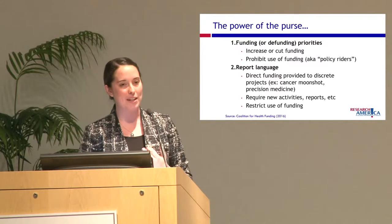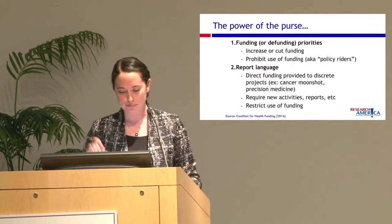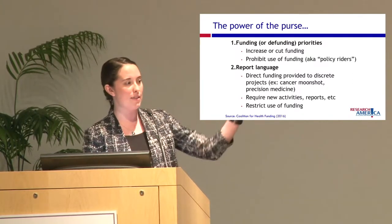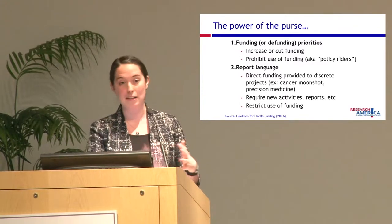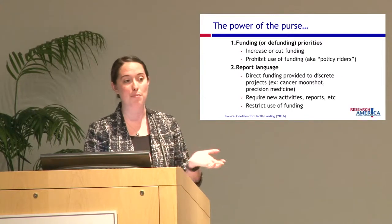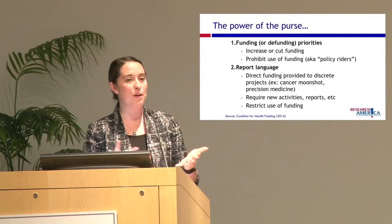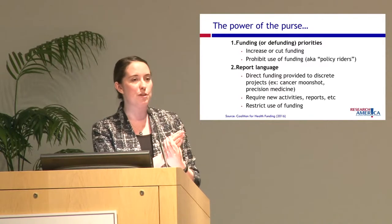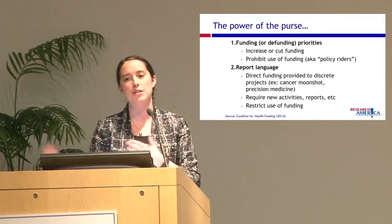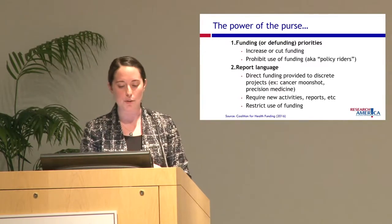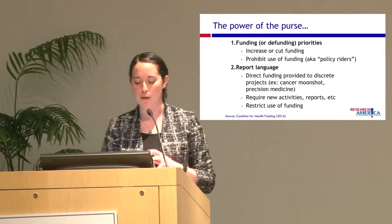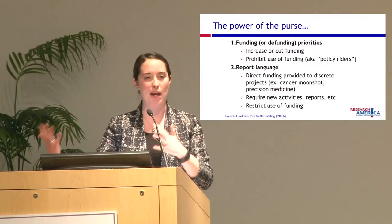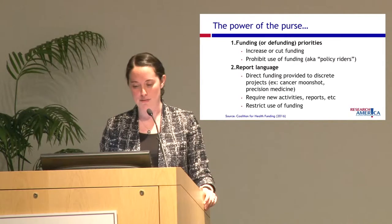In an appropriations bill, Congress can fund priorities — setting a dollar amount for NIH — or defund and spend less. That's at the discretion of the appropriations committee. An appropriations bill also comes with report language, where Congress tells the agency to focus on a certain program or pay special attention to rare diseases, for example. There are also policy riders, which prevent funding from being used for certain activities.